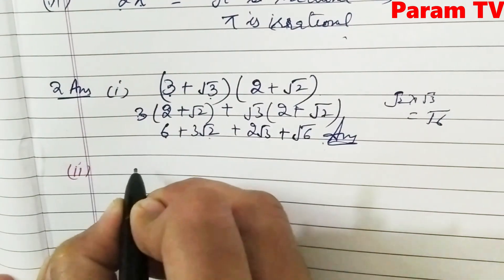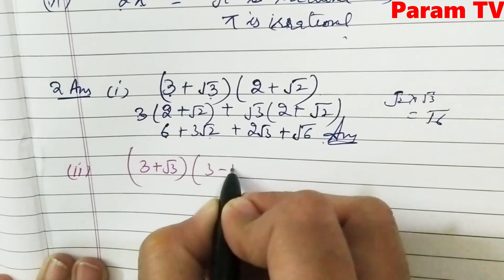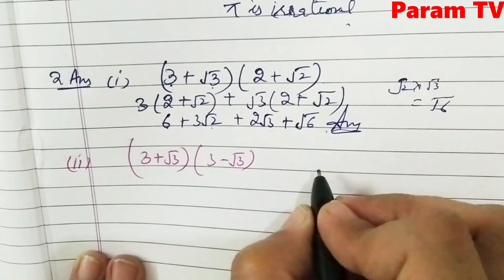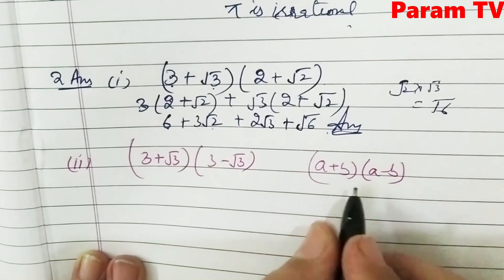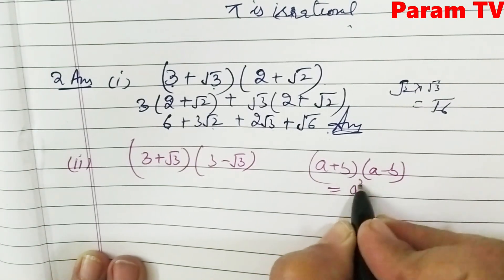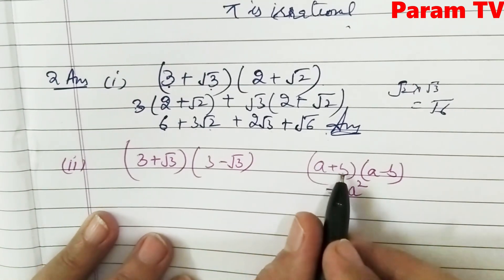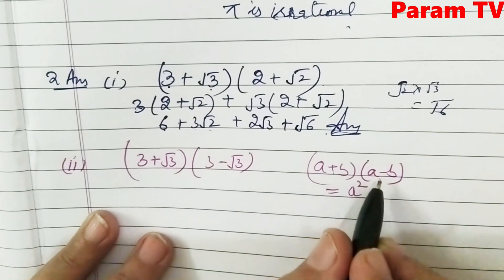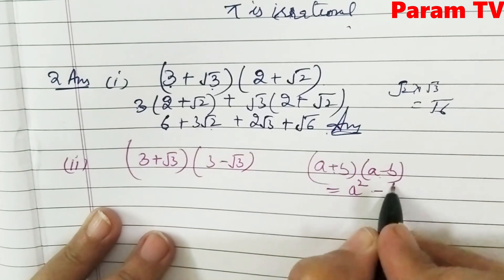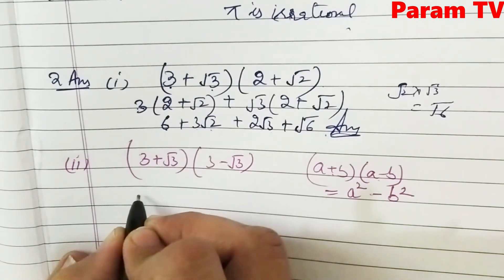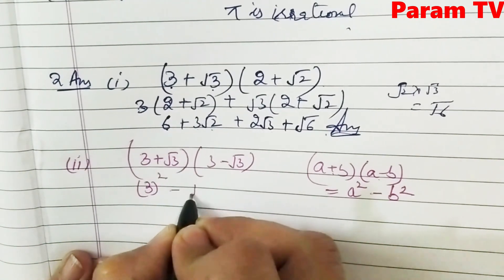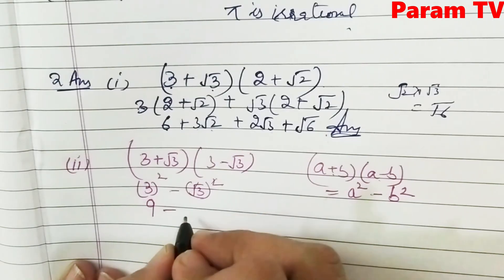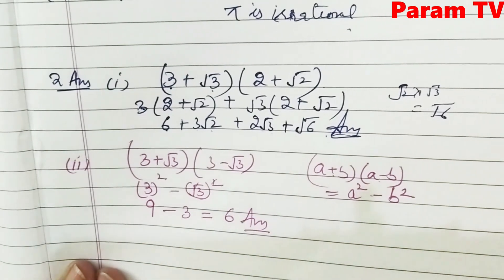Second part: (3 + √3)(3 - √3). This is the identity (A + B)(A - B) = A² - B². Applying it: 3² minus (√3)² = 9 minus 3 = 6. That is the answer.